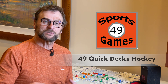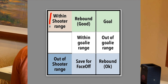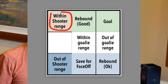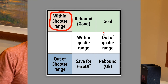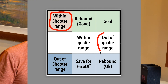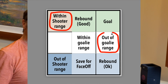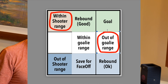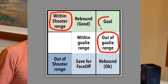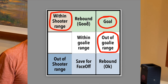So if it's within the shooter's range — in this case with Henrik Sedin you roll a 1 to 4 — and it's outside the goalie's range, which for Martin Gerber would be a 6 to a 12, that's a goal. Inside the shooter, outside the goalie — that's a goal.